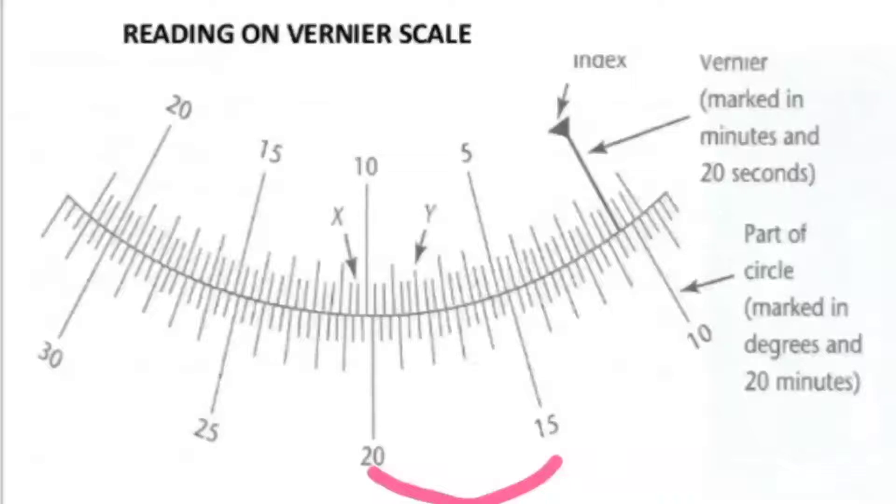So 1 part will be equal to 1 degree. So here this will be 16. If you see between 15 to 16, only 3 parts are there. So that 60 minutes is separated into 3 parts, that is 20 minutes.